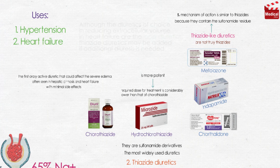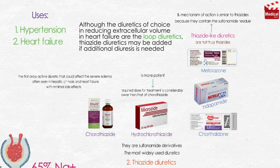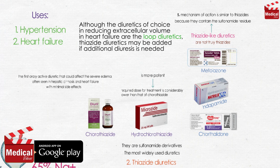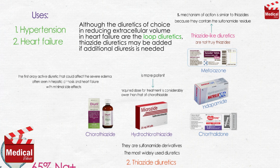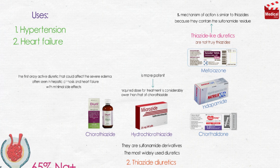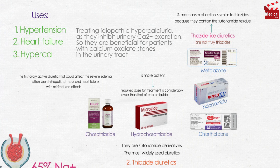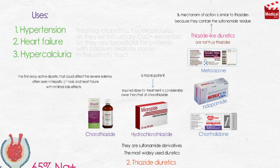Although the diuretics of choice for reducing extracellular volume in heart failure are the loop diuretics, thiazide diuretics may be added if additional diuresis is needed. The thiazides can also be useful in treating idiopathic hypercalciuria, as they inhibit urinary calcium excretion, making them beneficial for patients with calcium oxalate stones in the urinary tract.